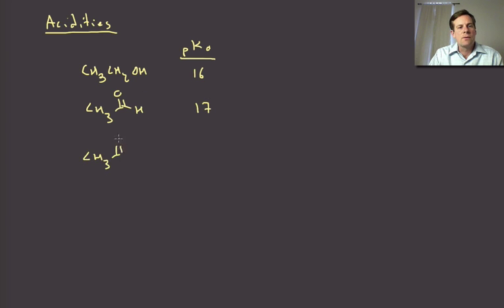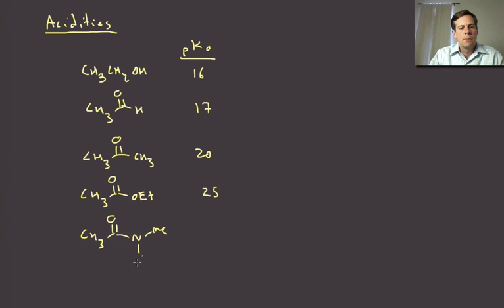We just talked about acetone and that's going to be approximately 20, maybe 19 to 20. An ester like ethyl acetate is going to be about 25, and if we go up to an amide, we're going to be in the range of about 30.